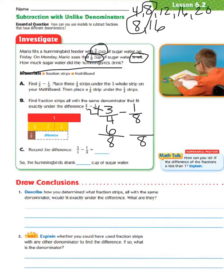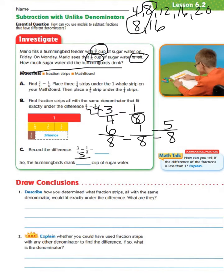Since we already have a denominator of 8 for the second fraction, we bring it straight down. We add our subtraction sign. Just like with addition, we only subtract the numerators — 6 minus 1 equals 5. The denominator stays the same. So the hummingbirds drank 5 eighths cup of sugar water.